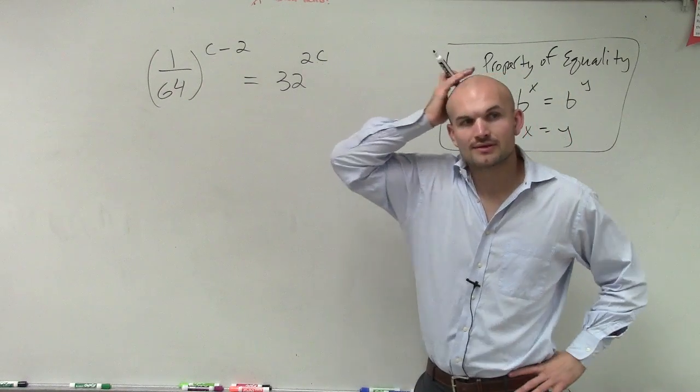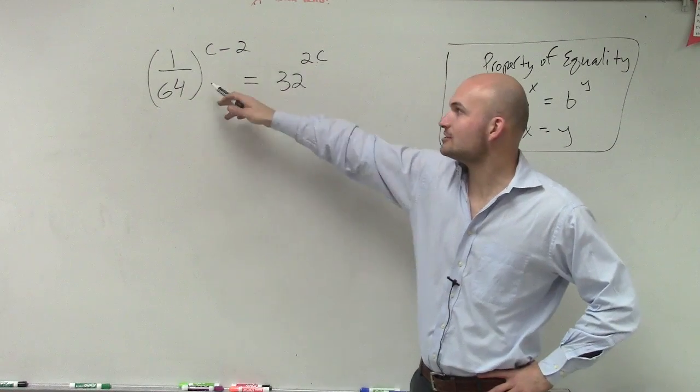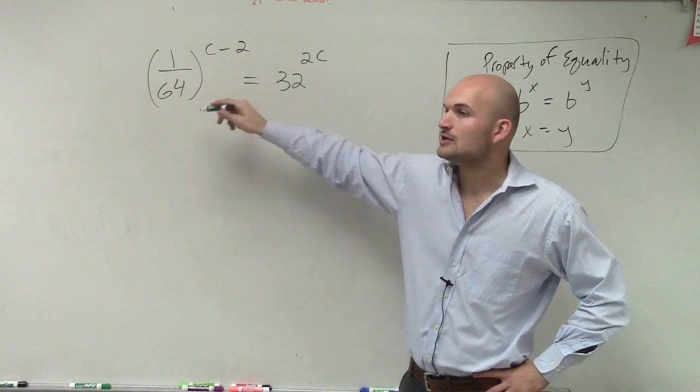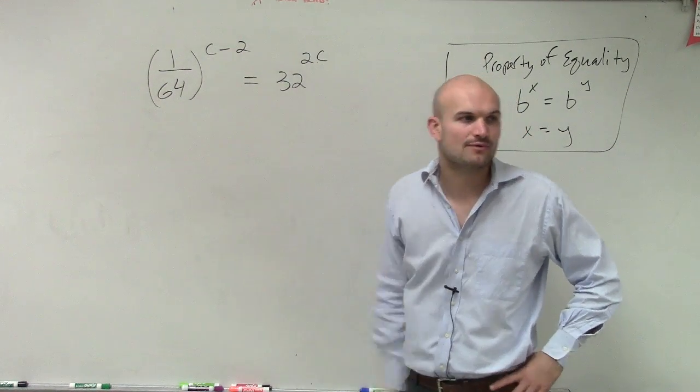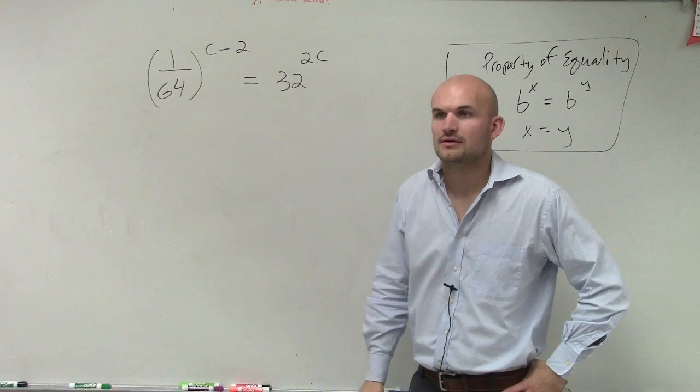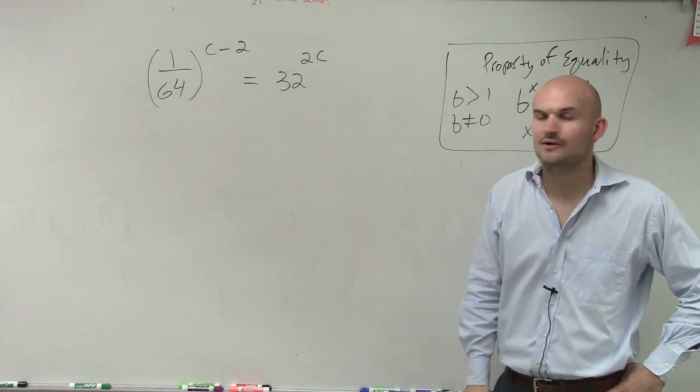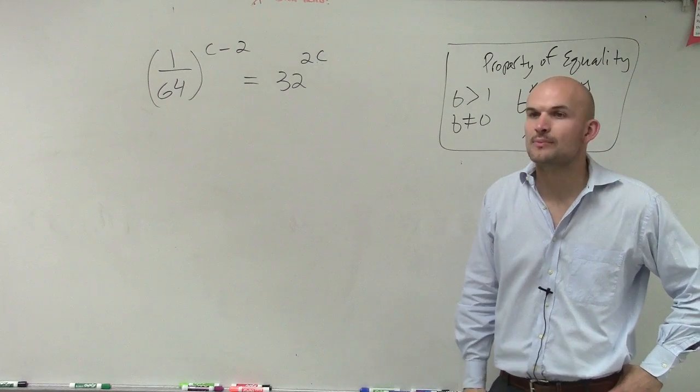So first of all, this is a fraction and that's not a fraction. This is just a whole number, not written as a fraction. The first thing I want to do is: how can I rewrite 64 in the numerator without having the 64 in the denominator? How can I rewrite that using my properties of exponents?